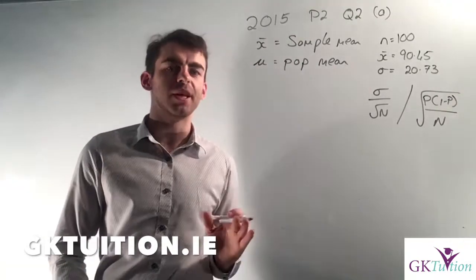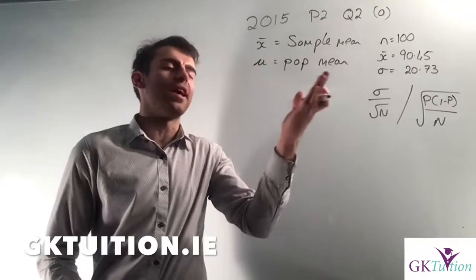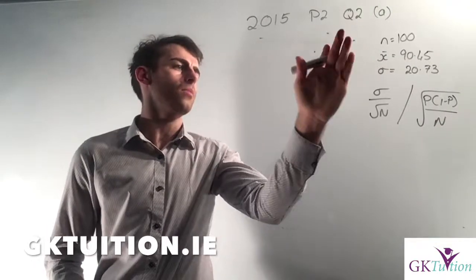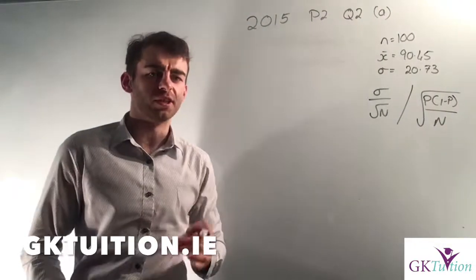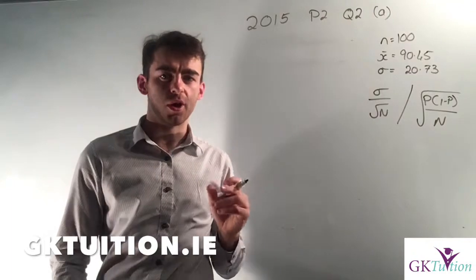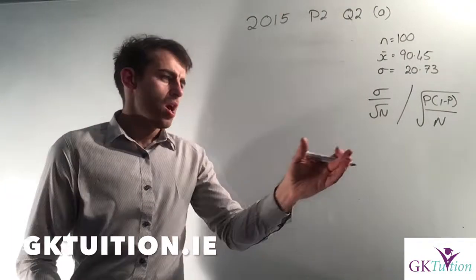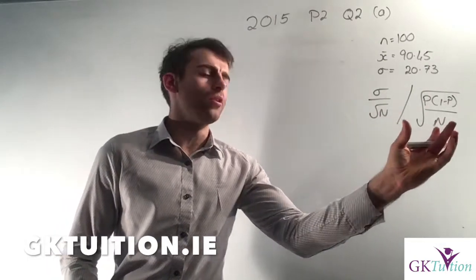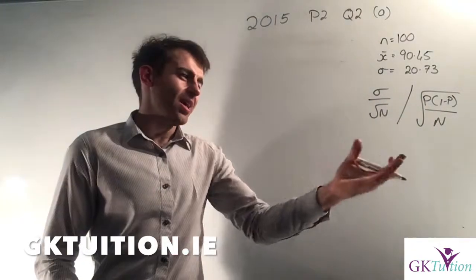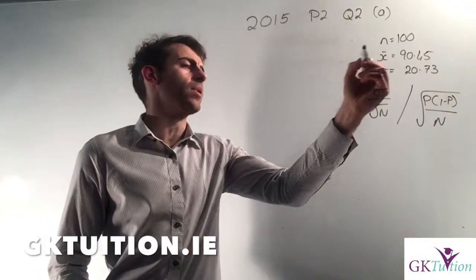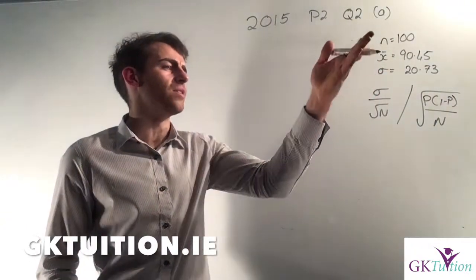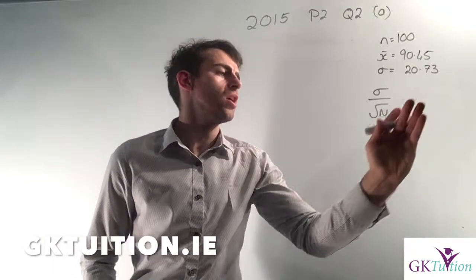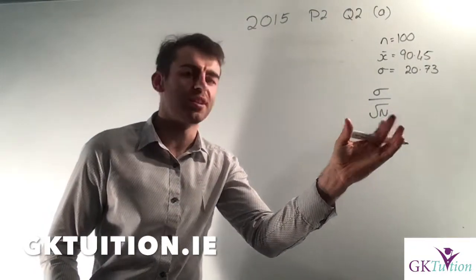That would be the average of every single person in the population. But obviously in this case it was impractical to survey everyone, so they just took a small sample of 100 people. When you're asked to do a confidence interval, you should be aware that there are two confidence intervals on the Leaving Cert Higher Level course. You need to ask yourself: are you using the standard error of the mean or the standard error of the proportion? In this case it should be quite clear — you've been given a sample mean, a standard deviation, and an N, with no reference to proportion or percentage, so you should recognise that you're using the standard error of the mean.